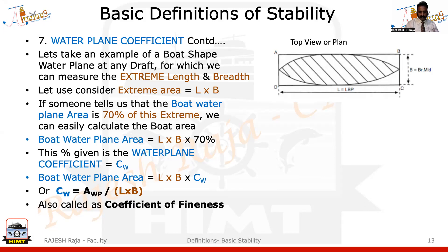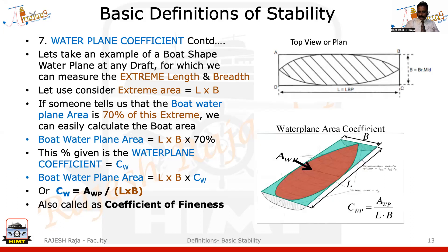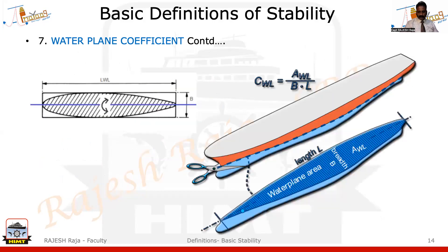Rearranging the equation: CW equals water plane area of the boat divided by the extreme length into breadth. CW is also called the coefficient of fineness. When the vessel is sliced exactly at a draft, the area you see from the top is called AWP — the water plane area. When somebody gives you the water plane coefficient, you can find the water plane area using: AWP equals L into B into CW.